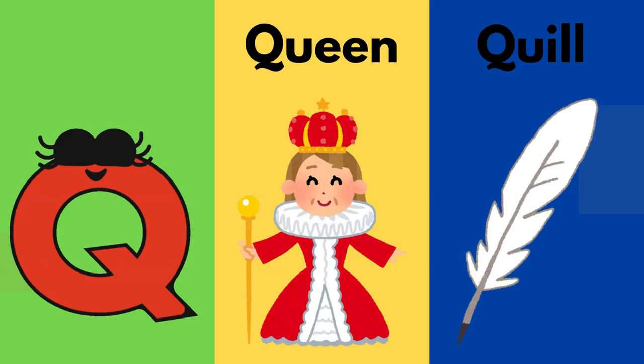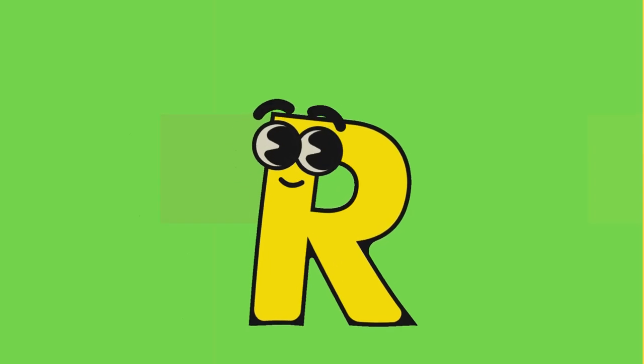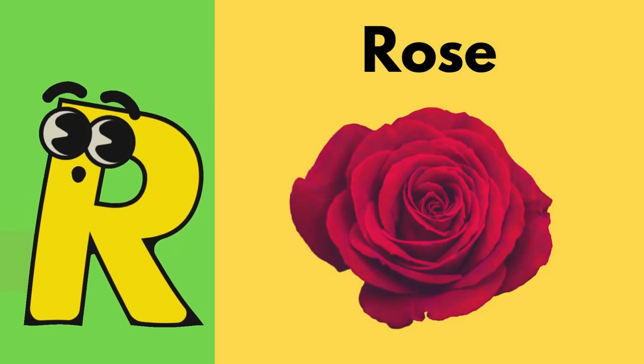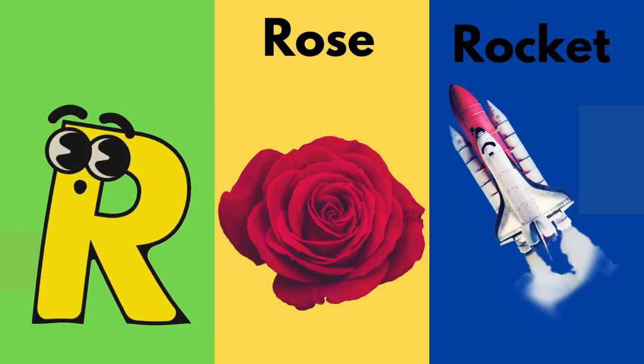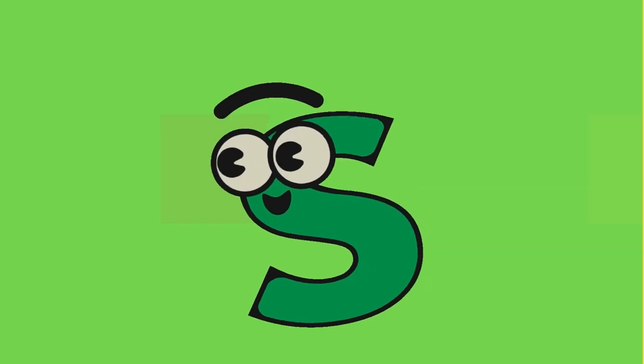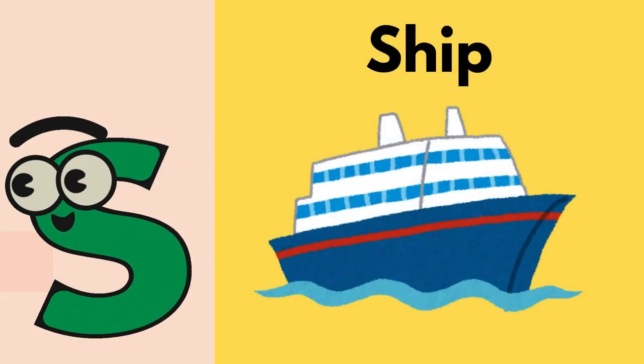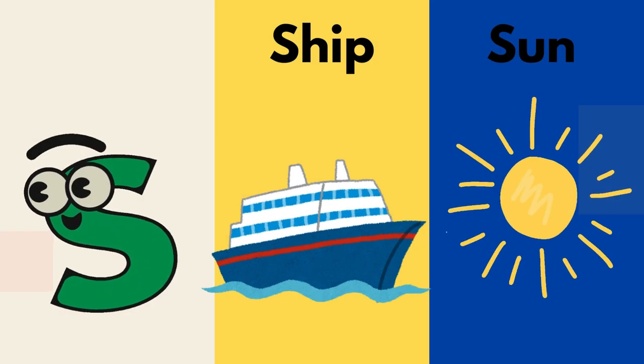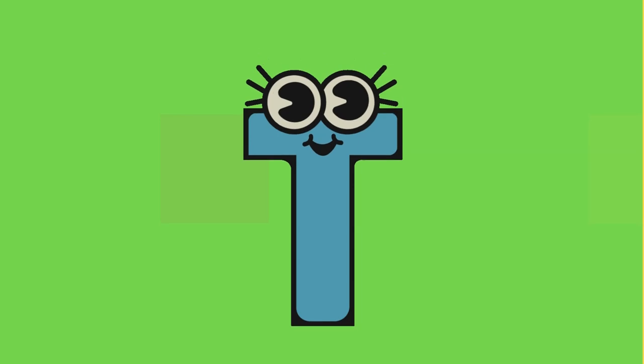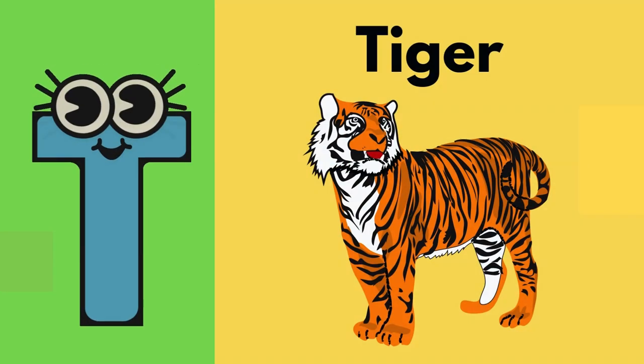R is for rose. Rocket. A rocket. S is for six, six, six. T is for T-te-time, T-te-t-tree.